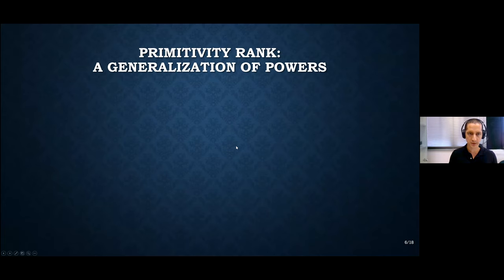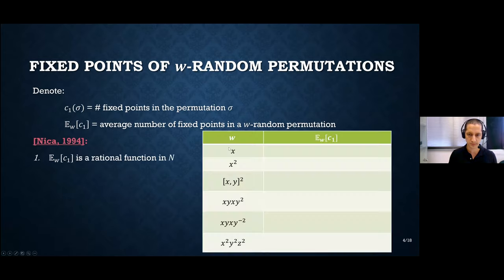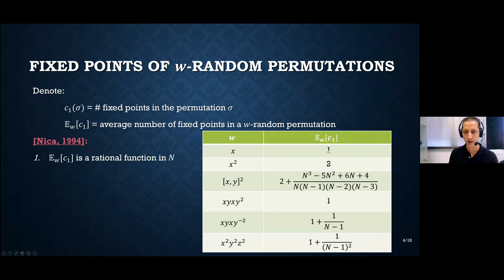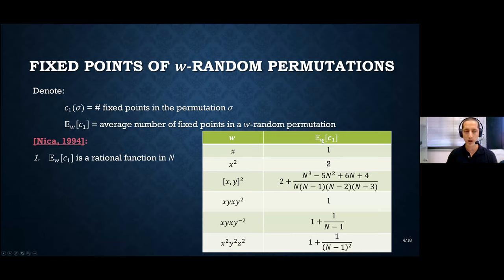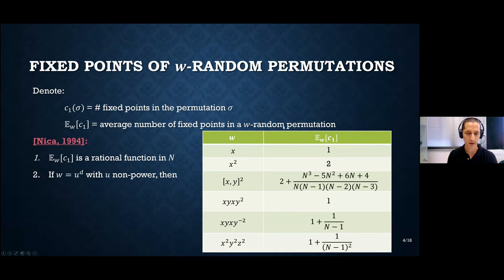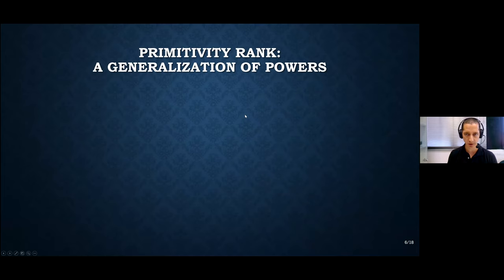Now the question is: we know the limit and when it deviates from one — but what about the second order of magnitude? Can we explain the deviation for non-power words? This is what the primitivity rank does — it is a generalization of powers in free groups. This is probably the most important definition in the talk.